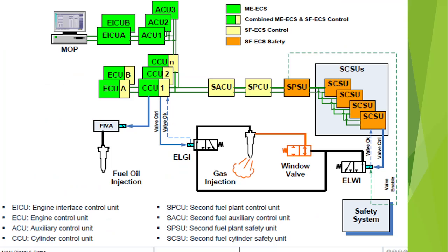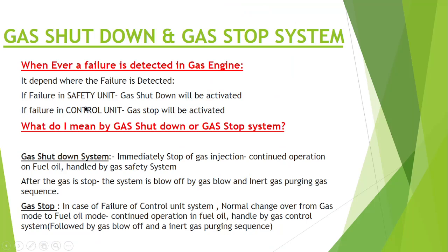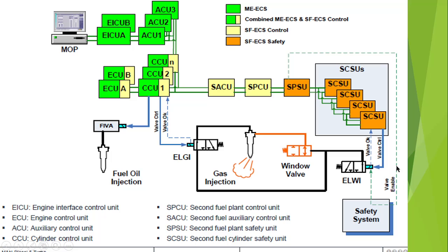The ELGI is basically controlled by a safety unit, and the ELWI is controlled by a control unit. If there is a failure regarding the ELWI, gas shutdown will be activated, but if there is a failure regarding the ELGI, gas stop will be activated.